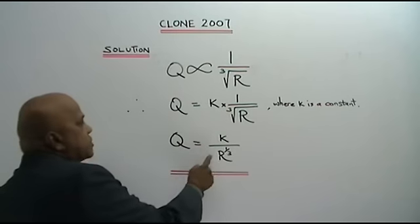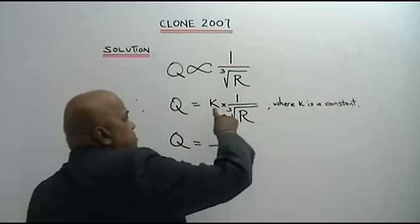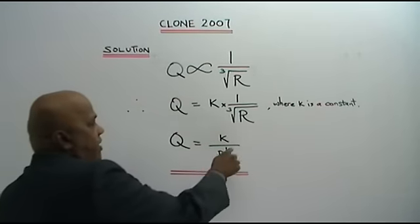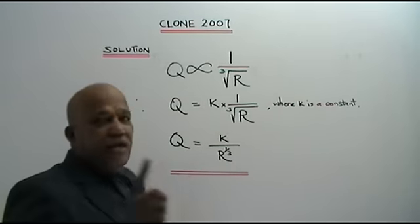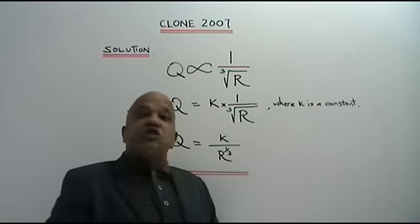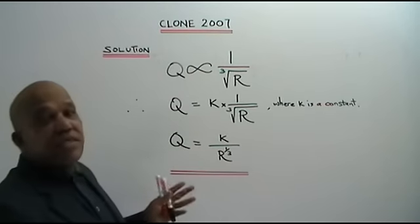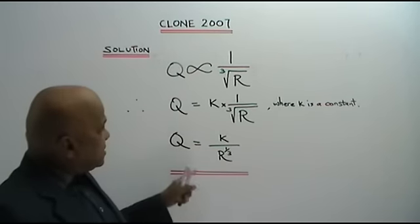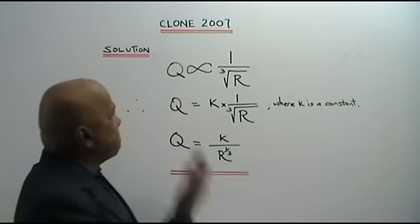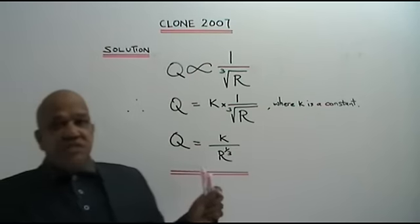From here we get Q equals to K over cube root of R. We write it as R to the power of 1 over 3. One over three is cube root of R, one over two is square root. Remember that. It is very simple. This is your answer. This is one of the simplest questions regarding inverse variation.